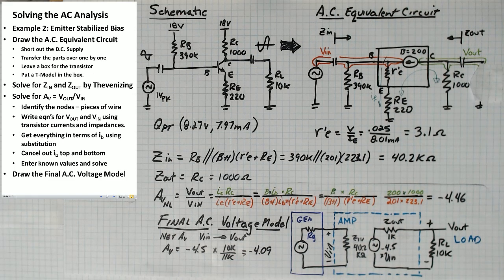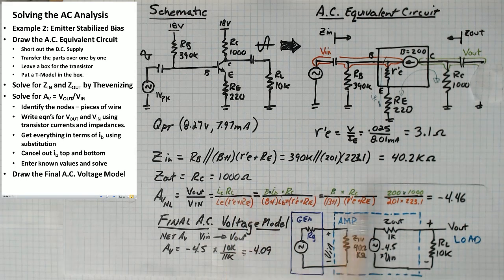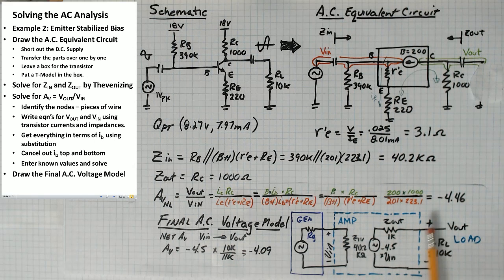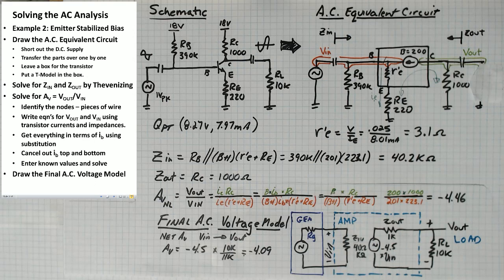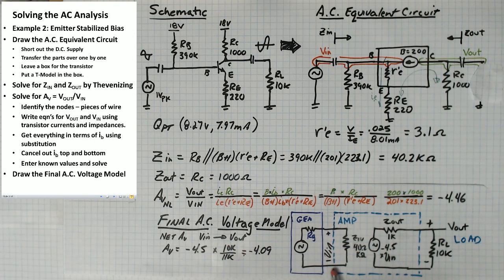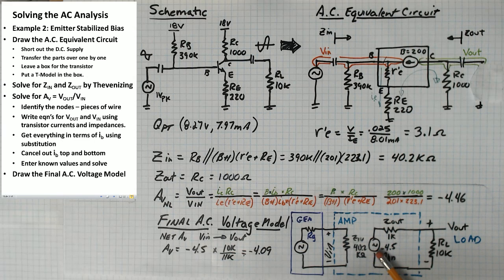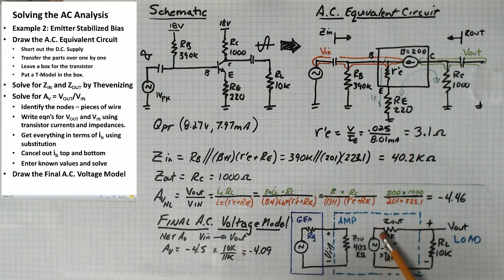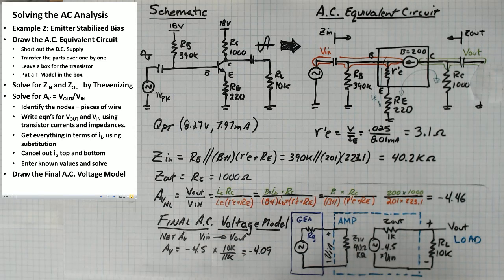The final step is to transfer these numbers. 40.2K, Z out 1K, and AV of 4.46. We want to transfer those into a two-port voltage model of our amplifier. At the end of the day, the whole goal of analysis is to say, this is what our amplifier works like. You put a voltage in here and it gets amplified this many times and it gets delivered to a load through an output impedance of this much.